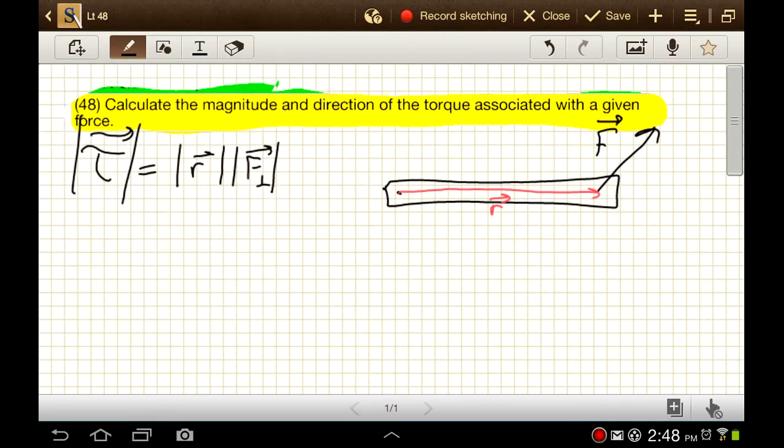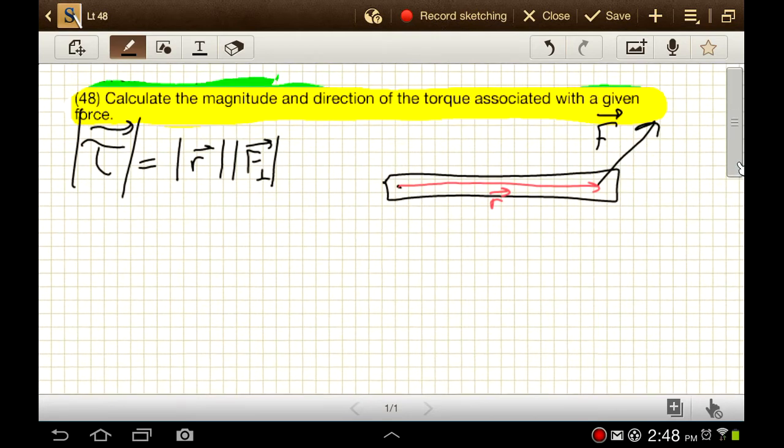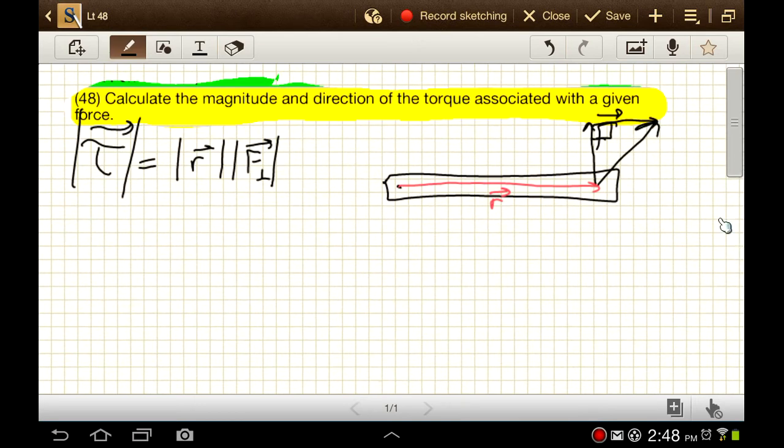And so in this one we care about what this distance is, and we also care about the part of this force that's perpendicular to this position vector. So we could break that up into the part that's perpendicular and the part that's parallel to r. And this would be F perpendicular.